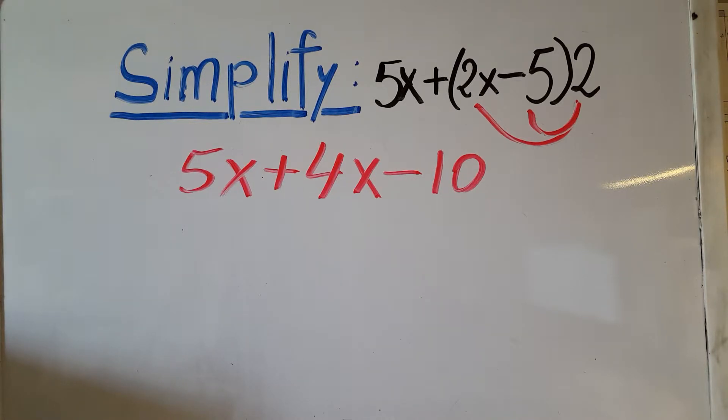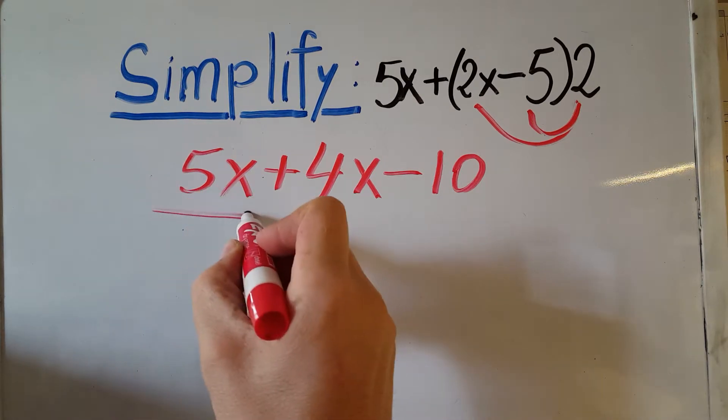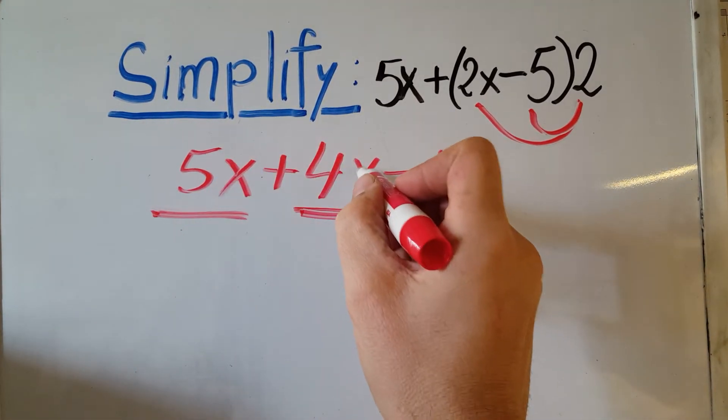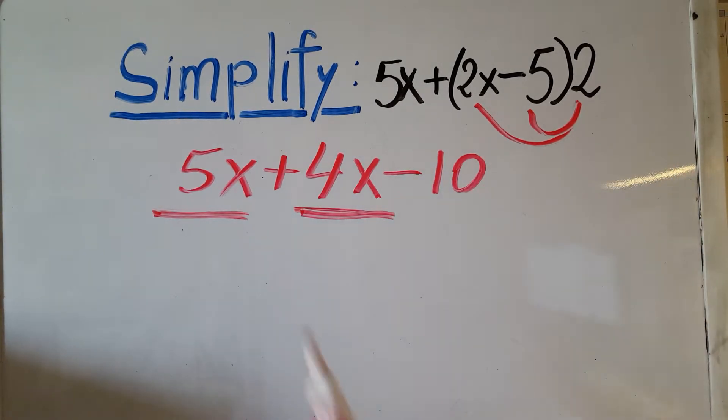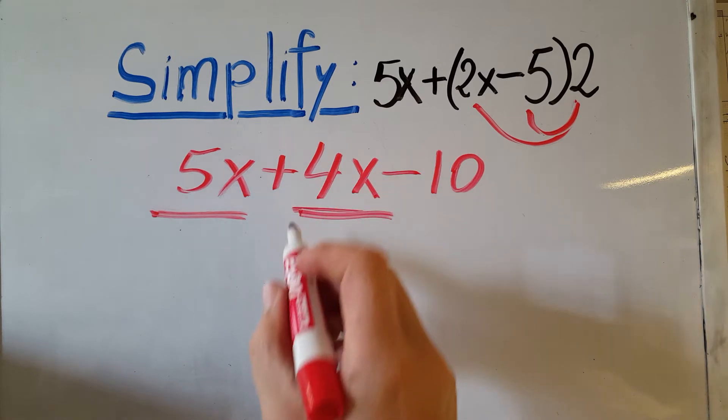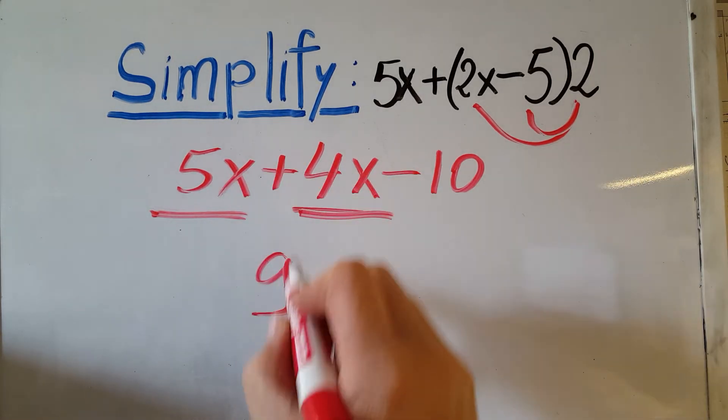Now the next step, we're going to go ahead and combine like terms. We can see that this term and this term, they both have an x. This one does not, so these two we can combine. So 5 plus 4 is going to be 9x.